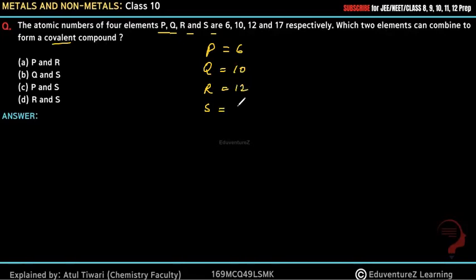Of the elements P, Q, R, S: P has atomic number 6, Q has atomic number 10, R has atomic number 12, and S has atomic number 17. Their electronic configurations are: P is 2, 4; Q is 2, 8; R is 2, 8, 2; and S is 2, 8, 7.